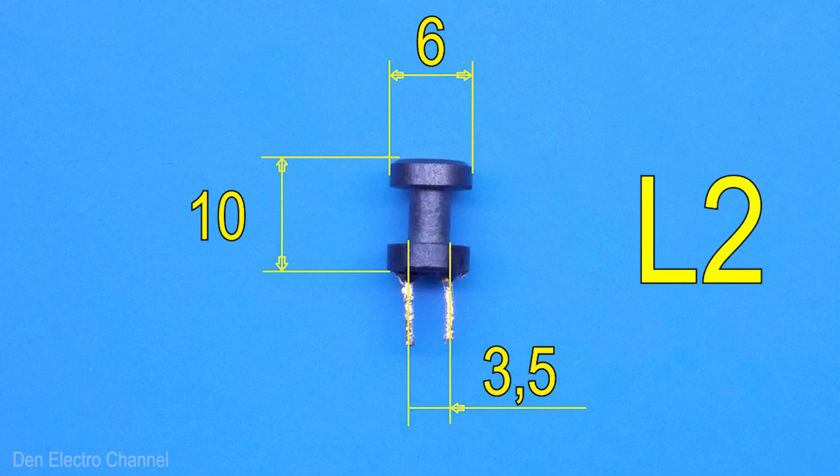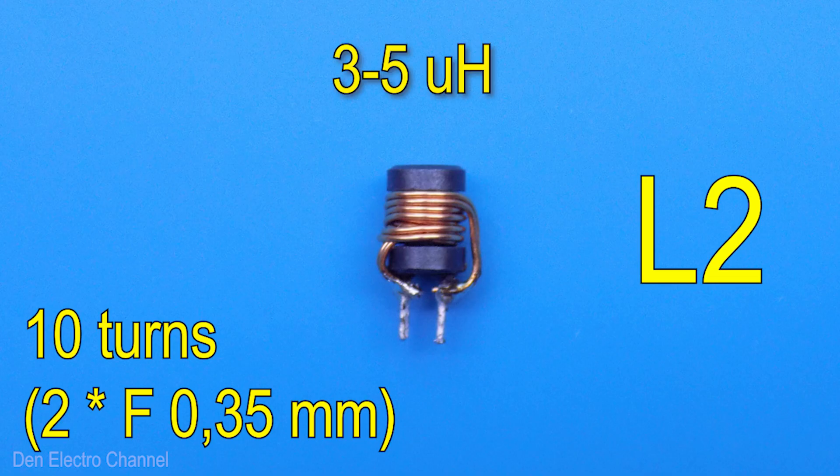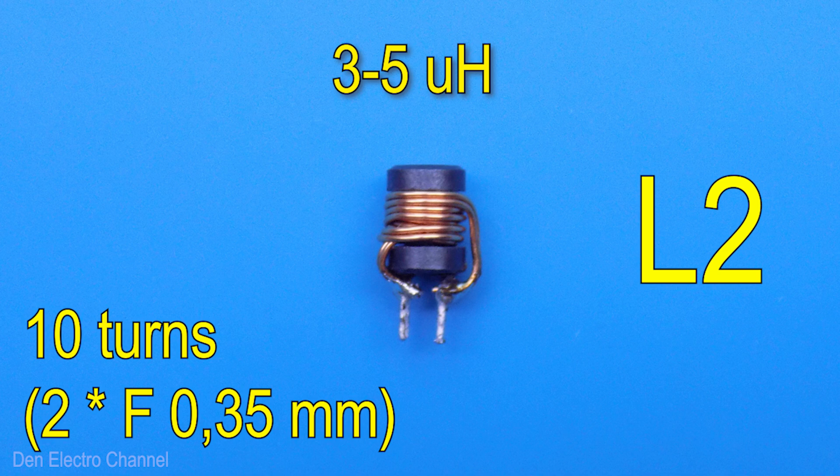I made choke L2 from a small ferrite dumbbell. You need to make 10 turns of a double wire on it to get an inductance of 3 to 5 microhenrys.